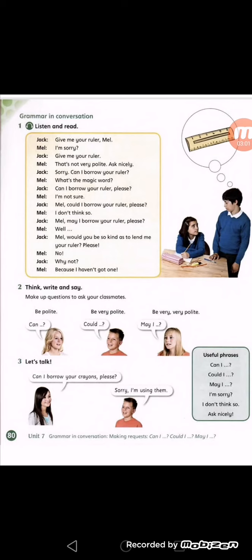Jack says: 'Sorry. Can I borrow your ruler?' Mel asks: 'What's the magic word?' The magic word is a word that, when added to a sentence, makes it more polite. Jack then says: 'Can I borrow your ruler, please?' — and here 'please' is the magic word.